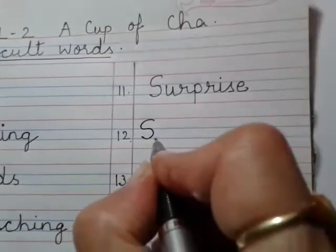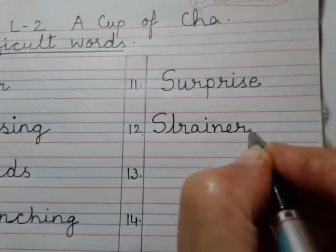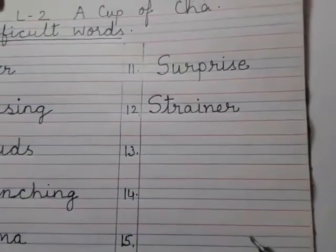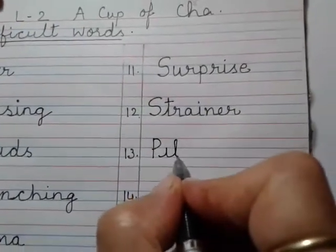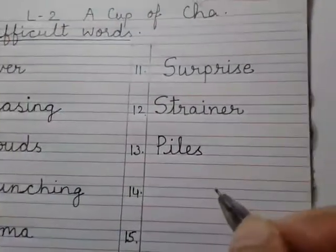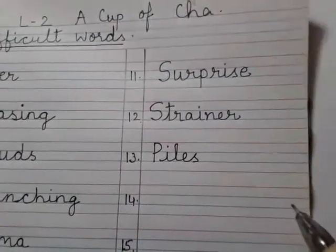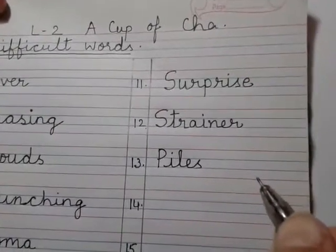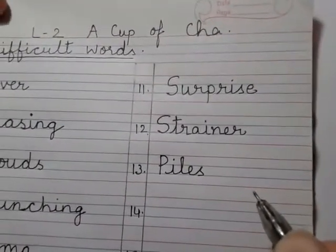Strainer — chalni. Jisse mummy doodh chaanti hai, chai chaanti hai — voh hota hai strainer. Piles means kisi bhi cheez ko ikattha karke ek dher bana dena. Jaise jab sukhe patte hum jhaarte hain toh use ikattha kar deti hai — voh tha piles. Hum ek ke upar ek book rakh deti hain toh voh book ki ho jaati hai pile.